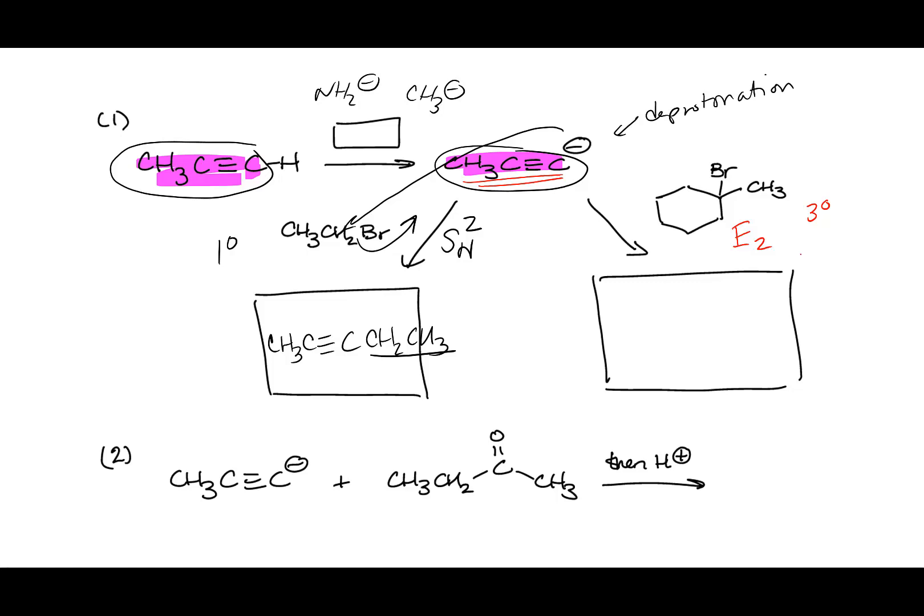Nearly everybody wrote down an SN2 or SN1 product — that's why I'm asking this question now. The alkynal anion is the first of the strong nucleophile/strong base reagents we'll talk about that will do either SN2 or E2. It won't do SN1. If it's with a primary or secondary halide it'll do SN2; if it's with a tertiary halide, it'll do E2. There's an alkoxide coming next in the next chapter.